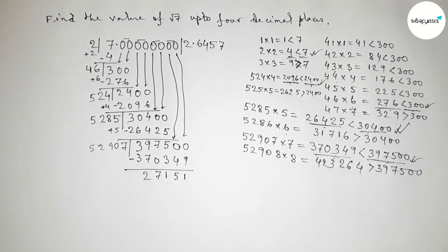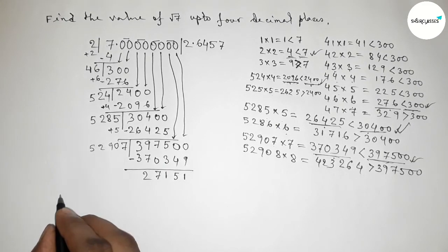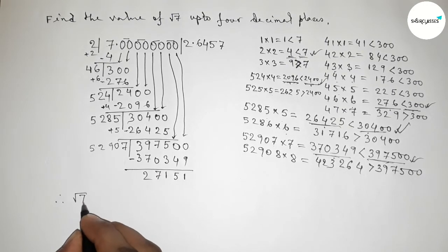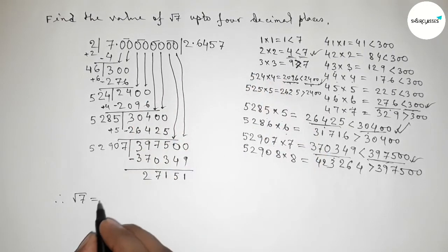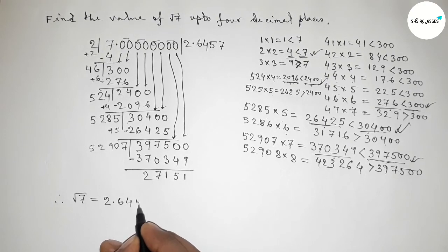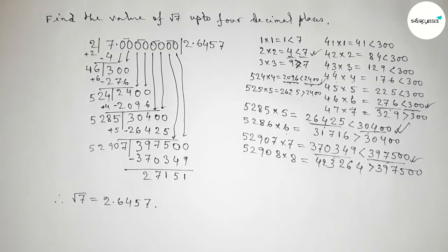So we have found the value of root 7 up to 4 decimal places, which is 2.6457. That's all — thanks for watching. If this video is helpful to you, then please share it.